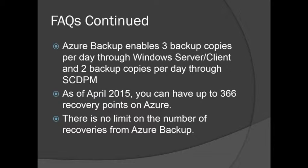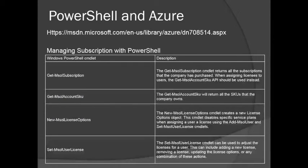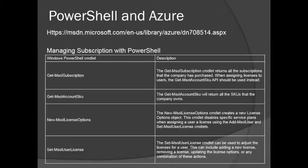Another thing you have to be sure you understand, because from what I heard they are asking on the exam, is that Microsoft also uses PowerShell. Here are some general PowerShell cmdlets for Azure on how to manage your subscription. Get-MsolSubscription — this returns all of your subscriptions that your company has purchased. Get-MsolAccountSku — this will return your SKU that the company owns. New-MsolLicenseOptions — this will show you new license option plans. Set-MsolUserLicense — this cmdlet is used to adjust the licenses for each user, such as adding or removing a license for any user that needs to back up their data to Azure.